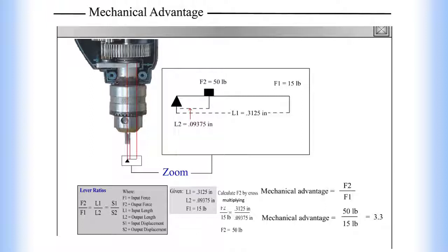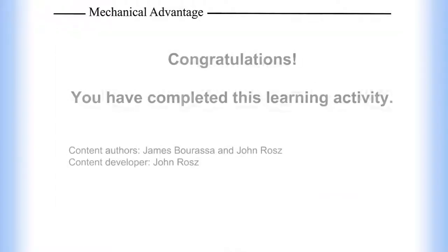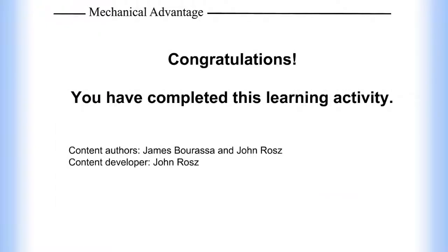We can calculate F2 by cross-multiplying. The mechanical advantage equals 50 pounds divided by 15 pounds, so the mechanical advantage is 3.3. Congratulations, you have completed this learning activity on mechanical advantage.